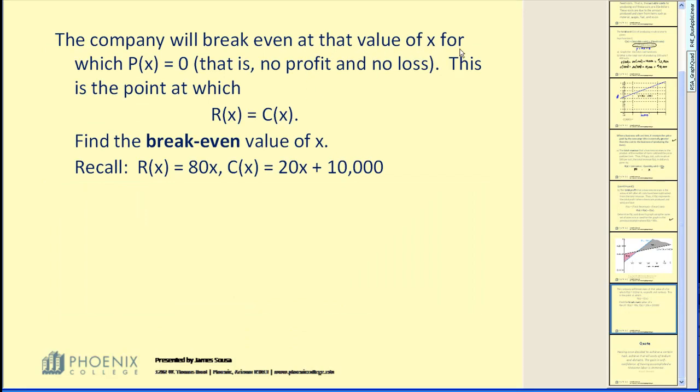A company will break even at that value of X for which P(x) equals zero, meaning you're not losing any money, but you're not gaining any money either. This point is at which the revenue equals the cost. Find the break-even value of X. Remember that our revenue function was 80X, and our cost function was 20X plus 10,000. So if you want to know where that point is, where we won't make any money, we won't lose any money, we need to set these two functions equal to each other and solve. Let's try it.